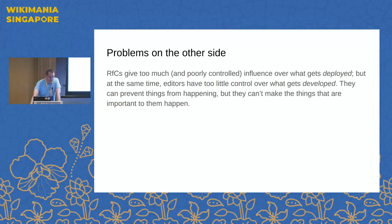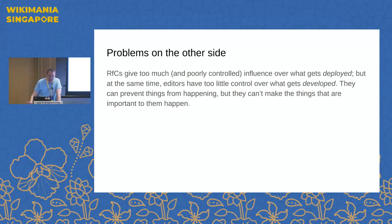There is an opposite problem which gets talked about even less: while RFCs give, in my opinion, too much power to the editing communities over whether software gets deployed, they get absolutely no power over what software gets created in the first place. RFCs are kind of like a veto — you can decide that you don't like what's happening, but there is no way to run an RFC that says we want the foundation to work on IP blocking software instead of a skin. There is no way to influence the selection of new projects or to propose a new project. That seems like a very important thing to figure out, because if you want to give communities real decision-making power, then that power needs to start at the planning level.